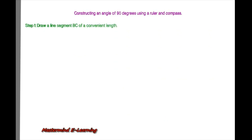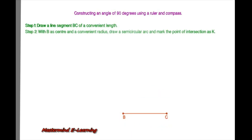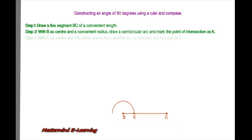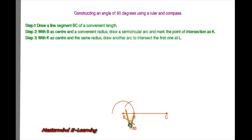Constructing an angle of 90 degrees using a ruler and a compass. The first step is to draw a line segment BC of a convenient length. Now with B as center and a convenient radius, draw a semicircular arc and mark the point of intersection as K. With K as center and the same radius, draw another arc to intersect the first one at L.